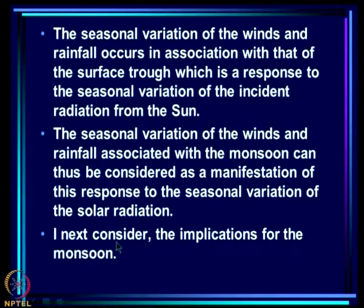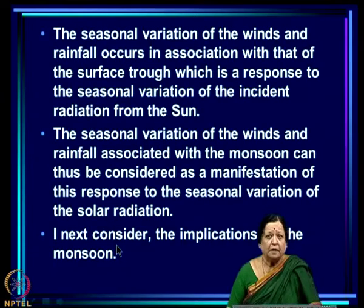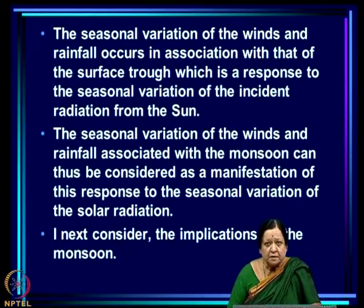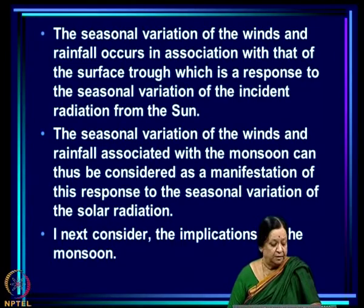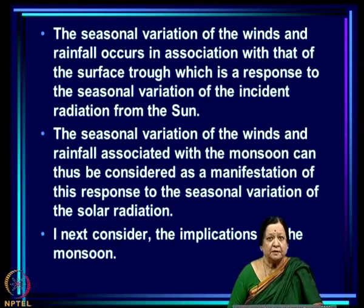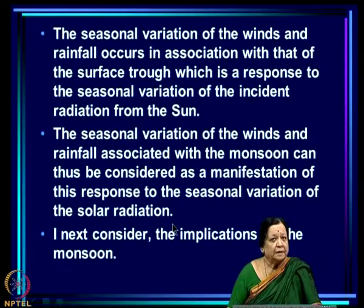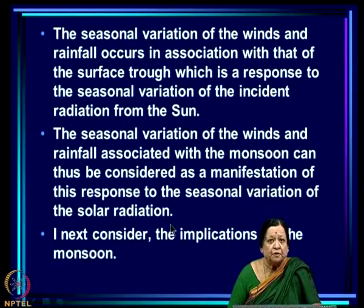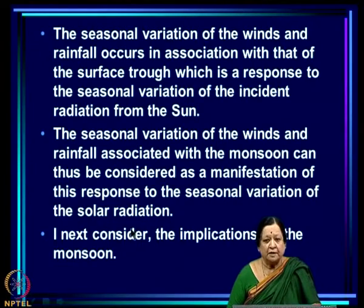The seasonal variation of winds and rainfall occurs in association with that of the surface trough, which is a response to the seasonal variation of incident radiation from the sun. The seasonal variation of winds and rainfall associated with the monsoon can therefore be considered as a manifestation of this response to the seasonal variation of solar radiation.